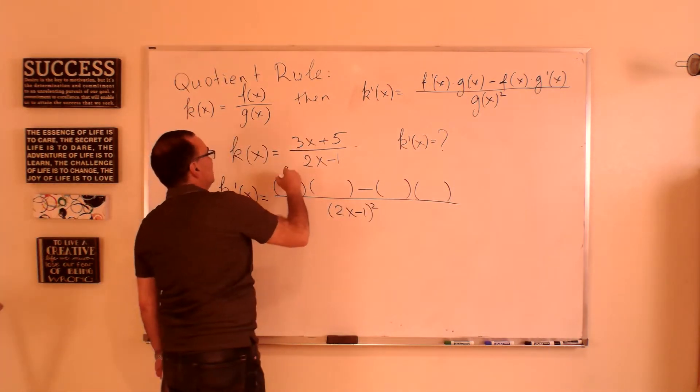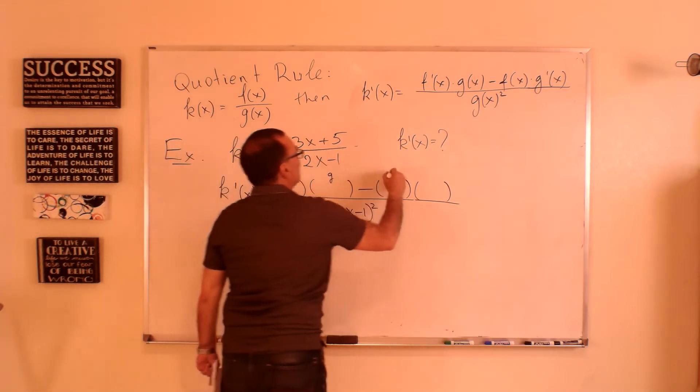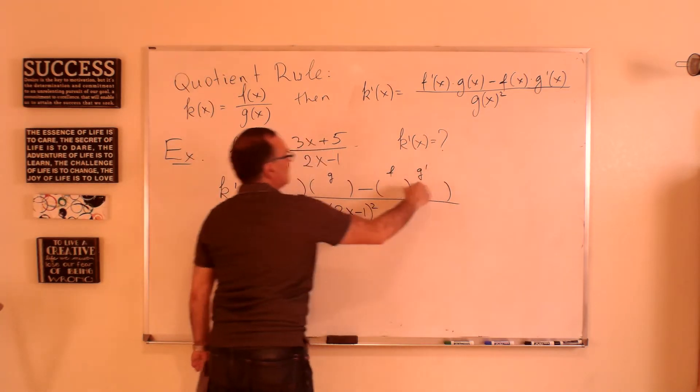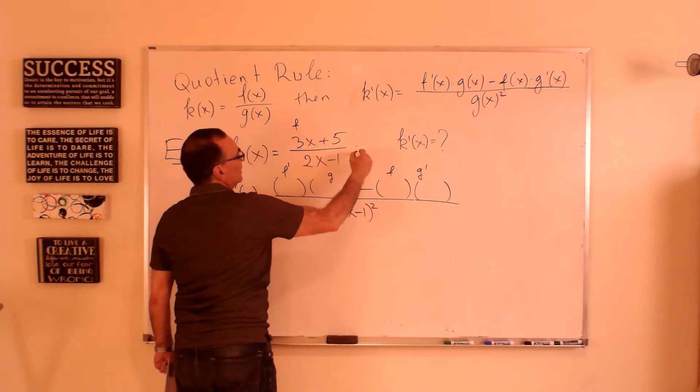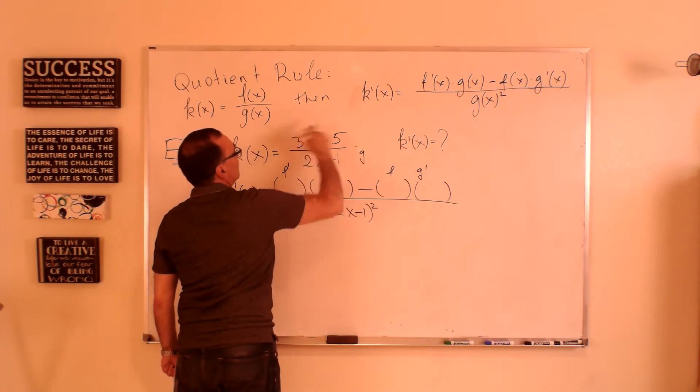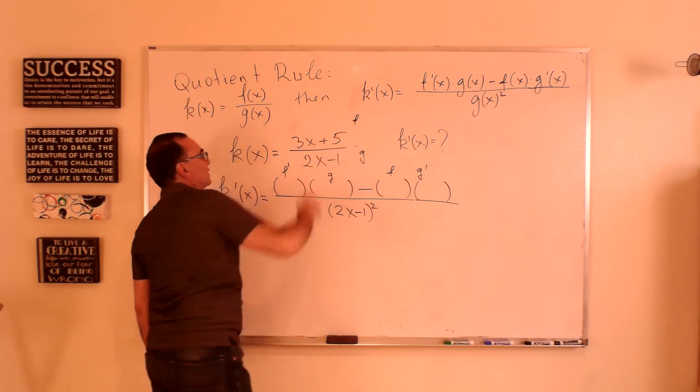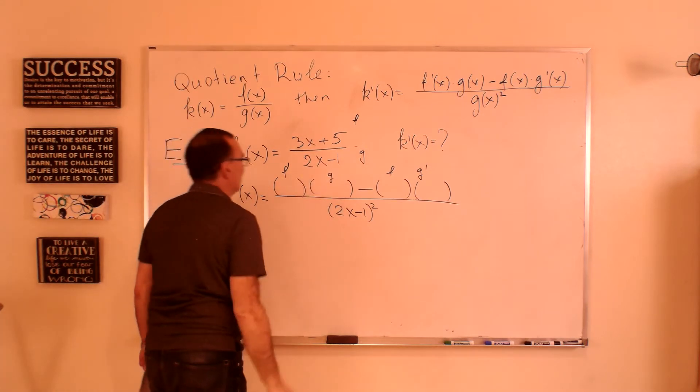These parentheses can denote f' times g minus f times g'. In this context, f is the numerator and g is the denominator. f is the numerator, 3x plus 5, and g is 2x minus 1.